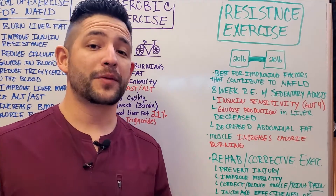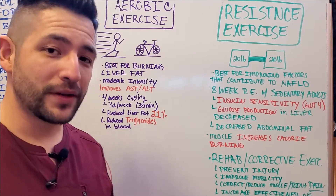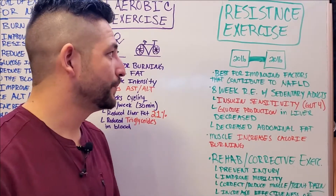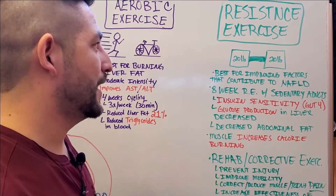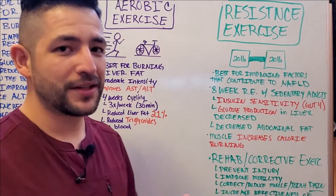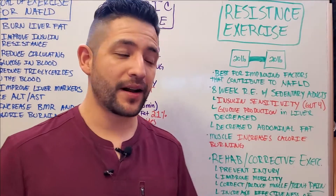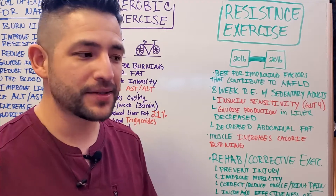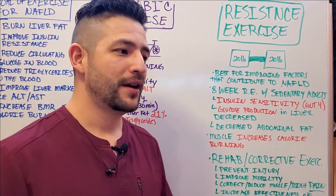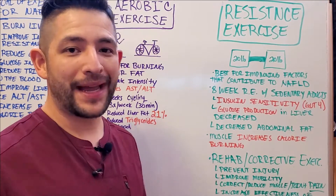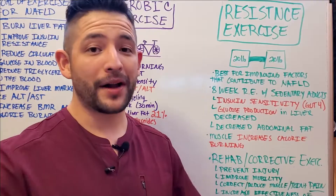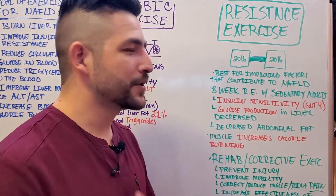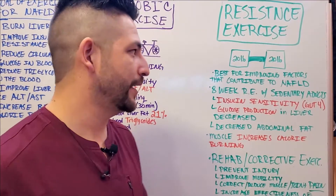The other form of exercise the research has shown is really helpful for reversing NAFLD and metabolic syndrome is resistance exercise or resistance training. Resistance training involves things like weightlifting with weights or dumbbells, kettlebells, resistance bands, and bodyweight exercises like push-ups, squats, and pull-ups. Those are all forms of resistance training.